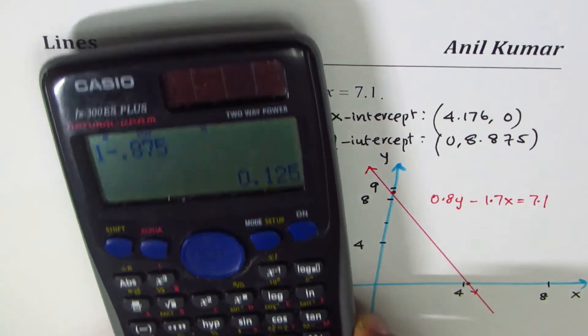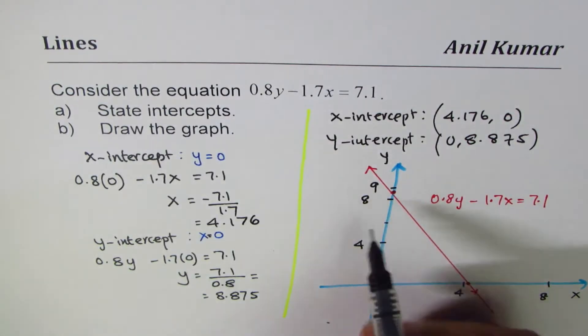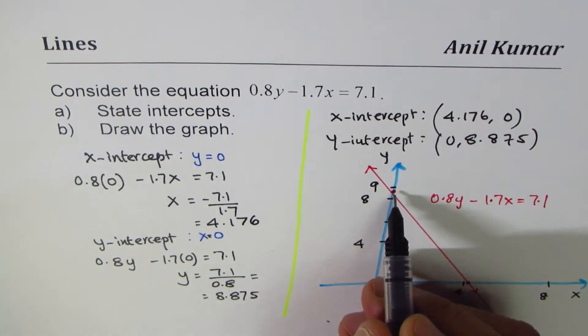I get 0.125. Do you see that? So this point—how much less it is—it is less by one-eighth.